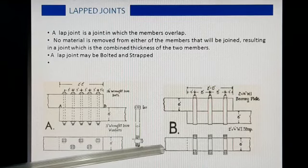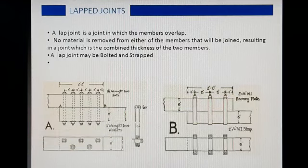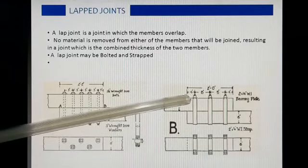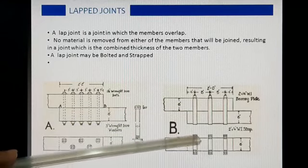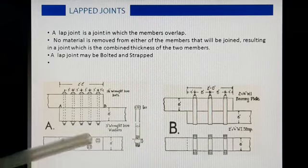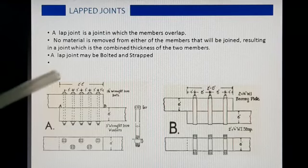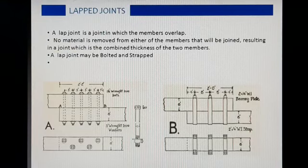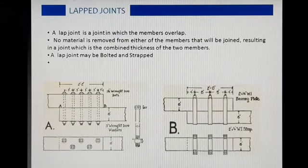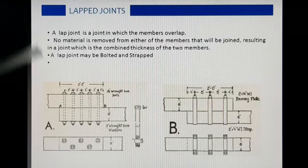दूसरे figure में हमने straps के माध्यम से दो timber pieces को join किया है. इस तरह के joint में U-shaped straps काम में लिये जाते हैं, और फिर ऊपर से एक simple strap के माध्यम से उनको आपस में join कर दिया जाता है. यह भी एक प्रकार का lengthening joint है. इन दोनों प्रकारों को normally हम वहाँ काम में लेते हैं जहाँ temporary work करना हो, बहुत ज़्यादा load न आ रहा हो, या joint visible न हो.